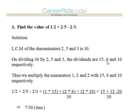Multiply 15, 6 and 10 by 1, 2 and 2 respectively. We get 1 times 15, 2 times 6 and 2 times 10, that is 15 + 12 - 20 over 30. The answer would be 7/30.